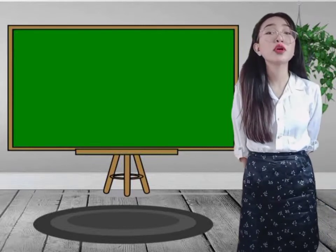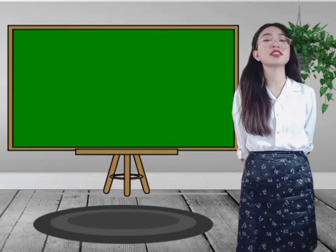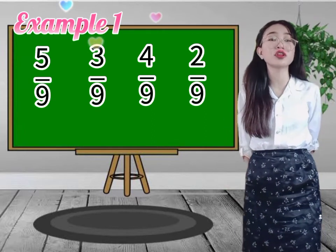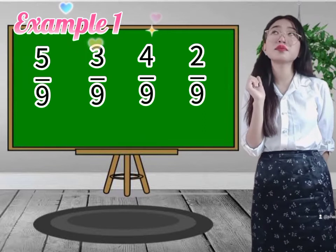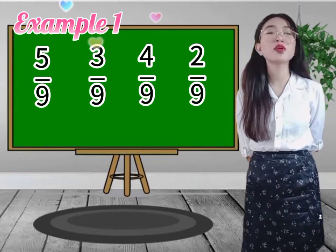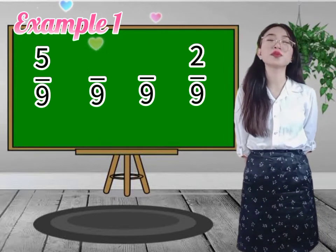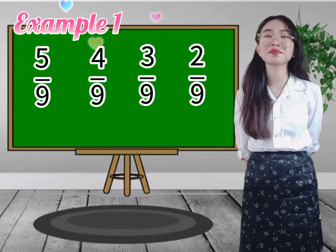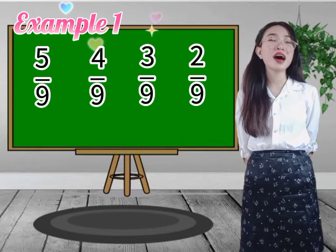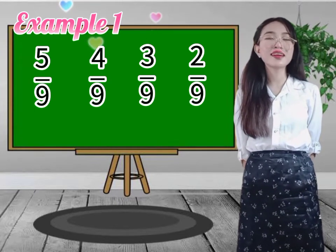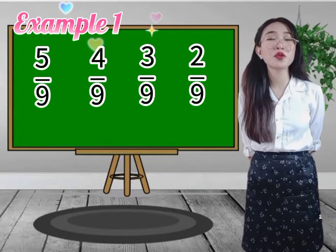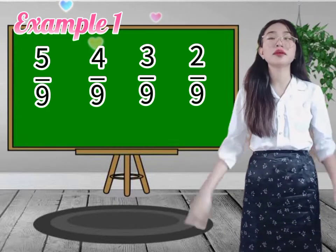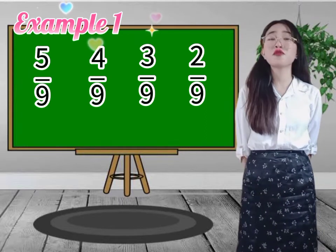Now we will use our comparing skills in comparing fractions. I have fractions here — arrange them from greatest to least. I'll give you 10 seconds. Since we already have the same denominator, we will compare the numerator only. So if we will compare 5 and 4, what symbol will we use?